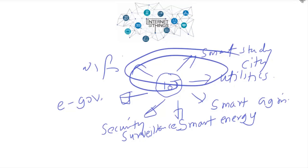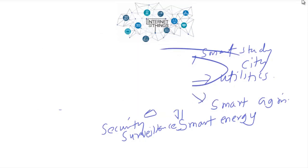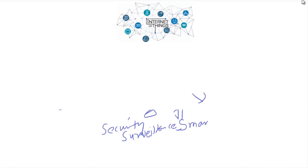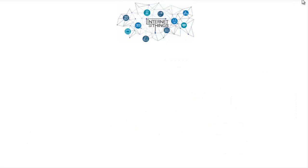IoT can interconnect a network of artificial physical devices, vehicles, home appliances, and even natural living beings like plants and animals. We have already seen this kind of application in real life — for example, an electrode associated with a plant that informs you when it requires water. These kinds of applications are associated with IoT, and you could develop one on your own.